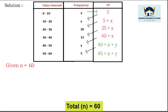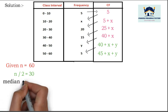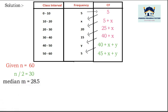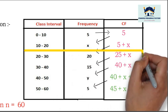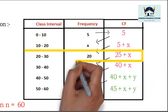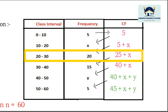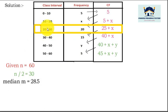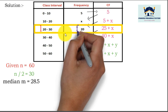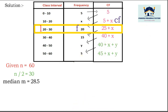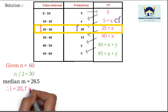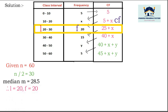Given n = 60, therefore n divided by 2 is equal to 30. Median m = 28.5, therefore the median class is 20 to 30. Now list the values: l = 20, f = 20, cf = 5 + x, h = 10.